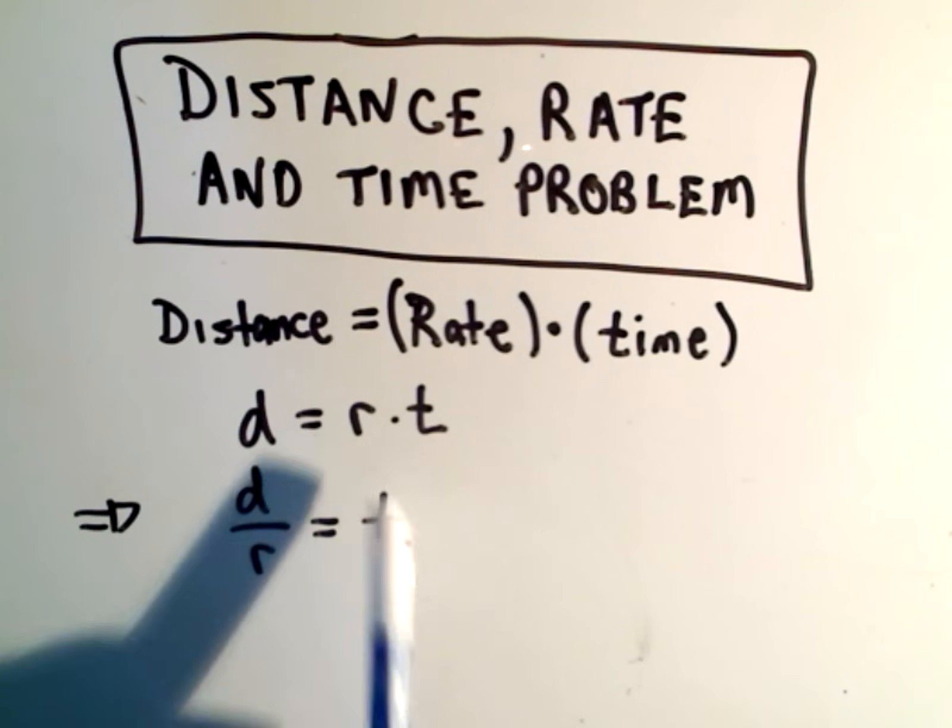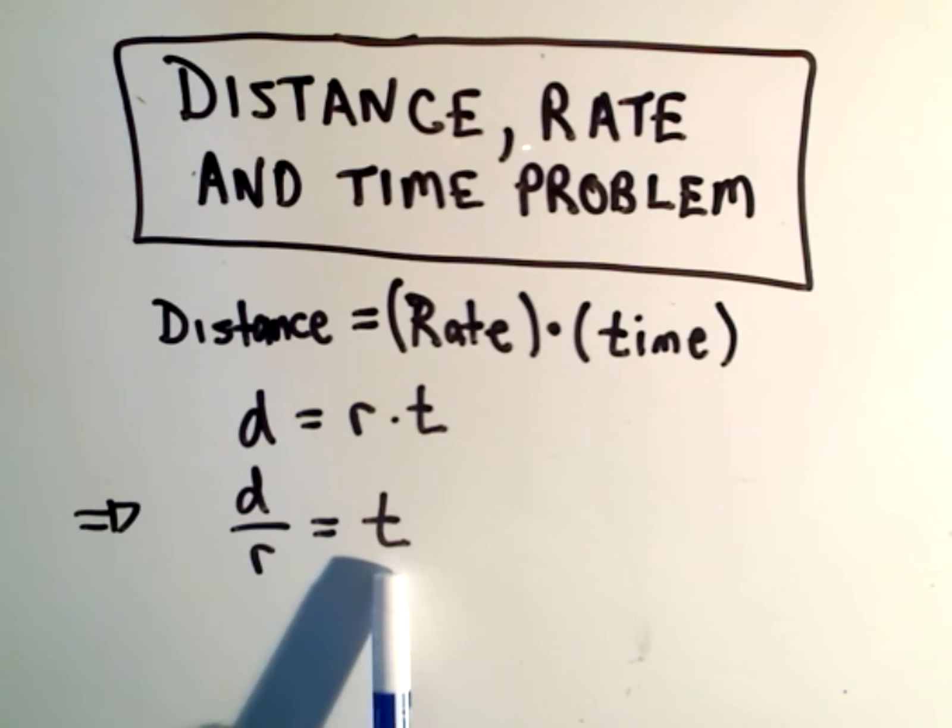So we write it shorthand as d equals r times t. Equivalently, you can solve for r times t just by dividing, and I've divided both sides by r to get t equals d over r, because I'm going to use that in my problem.